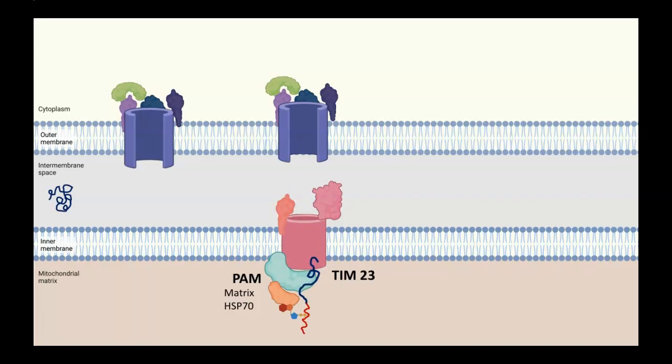This movement of the protein into the matrix also relies on the proton motive force. Remember that mitochondria are establishing a proton gradient, so it's more negative inside the matrix than in the intermembrane space. This helps with the transport. In fact, the TIM-23 PAM complex is also associated with subunits in the electron transport chain that probably help maintain this proton gradient in order to facilitate this movement.